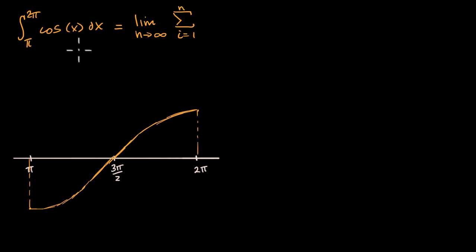And this would all actually end up being zero in this case. But the exercise for this video is to rewrite this as a limit as n approaches infinity of a Riemann sum.